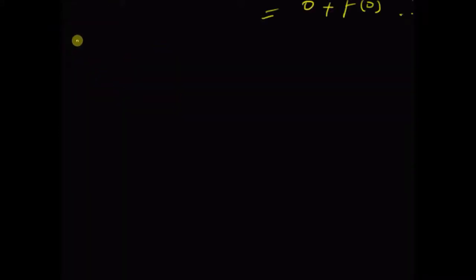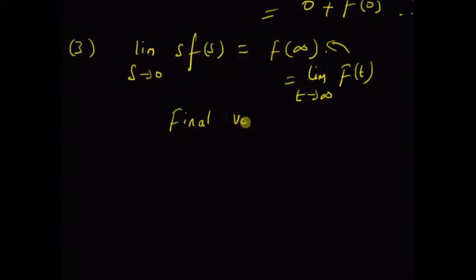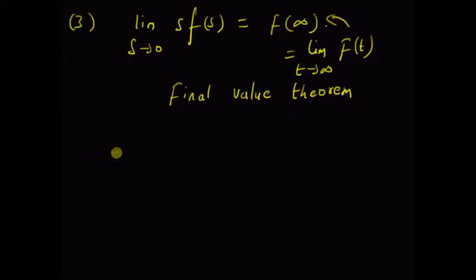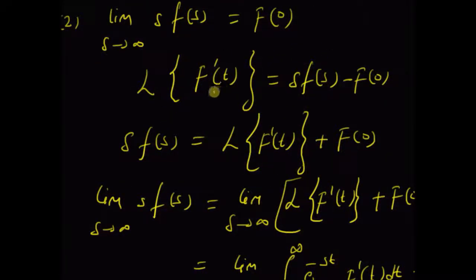Now let us look at the third and final limit: limit as s tends to 0 of s times F(s) should equal the final value of the function, that is f(∞), which can also be written as the limit as t tends to infinity of f(t). This is the final value theorem. Again starting with the definition of the Laplace transform of the first derivative: the Laplace transform of f'(t) equals s·F(s) minus f(0), and s·F(s) equals the Laplace transform of f'(t) plus f(0).